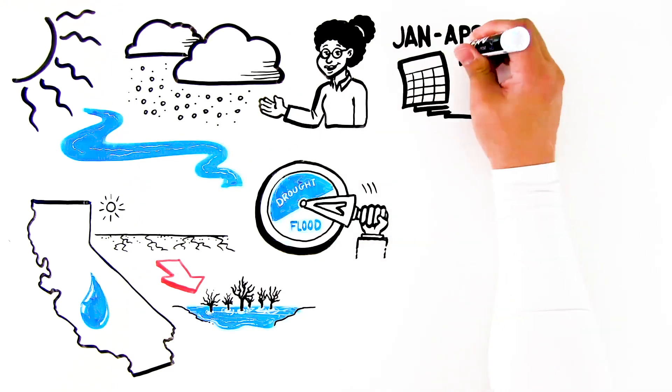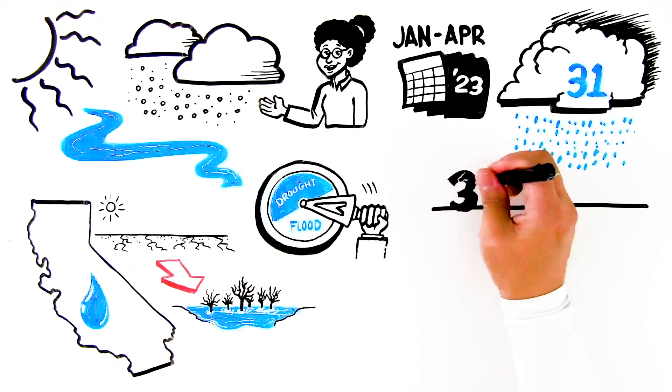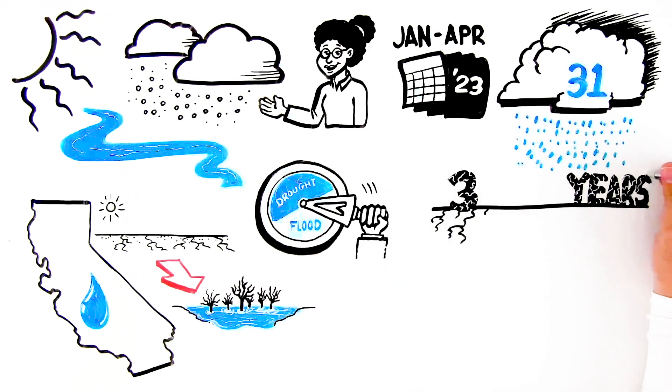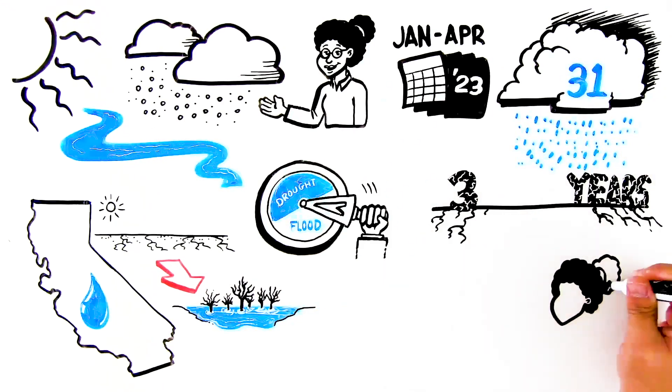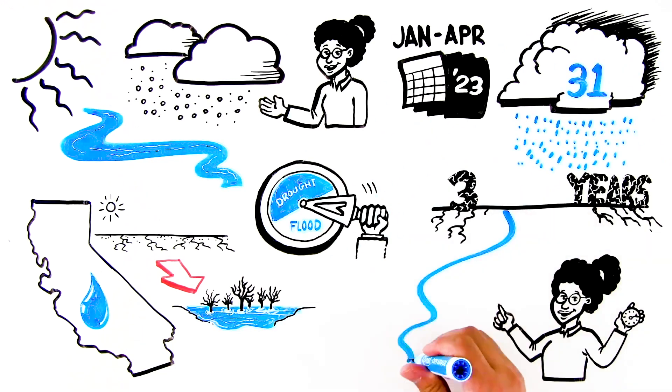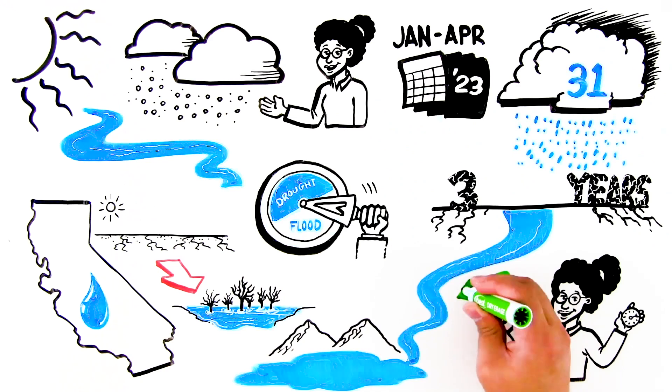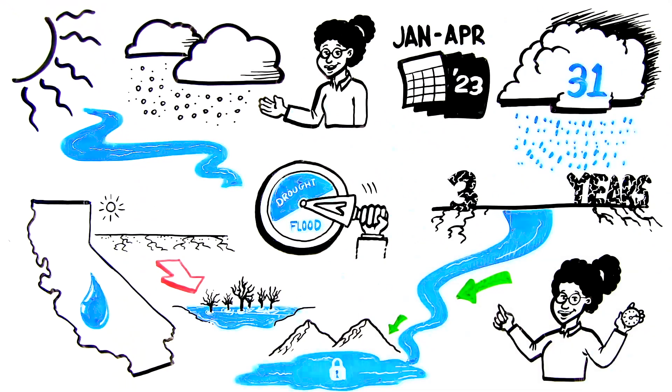From January to April of 2023, California experienced 31 heavy storms after three years of extreme drought. By managing the state's water supplies in real-time, we were able to responsibly capture and store water in reservoirs, building crucial water security for the inevitable dry period that is sure to follow.